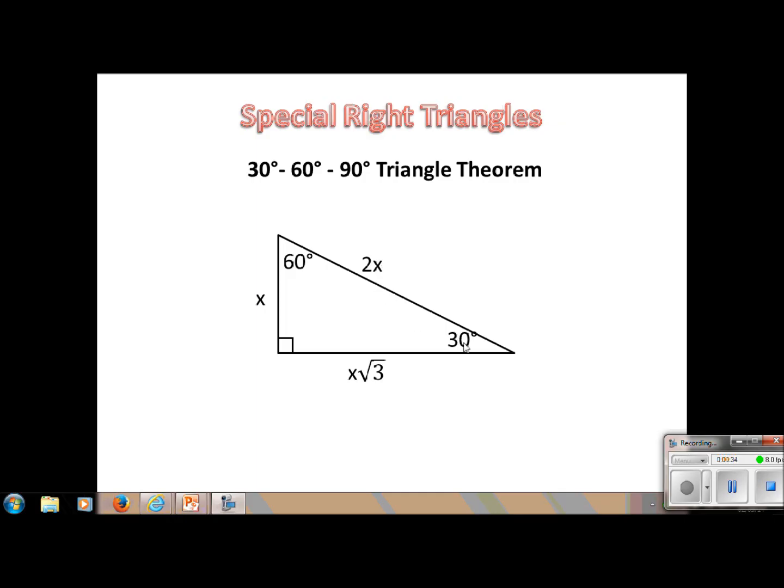The side opposite the 30 degrees is often called the short side and the hypotenuse is always double the short side. And the one opposite the 60 is if you take the short side and then multiply it by root 3, it will give you the measurement for the side opposite the 60 degrees.